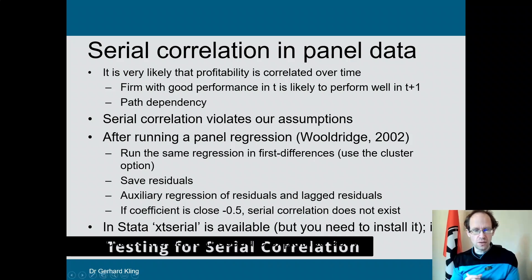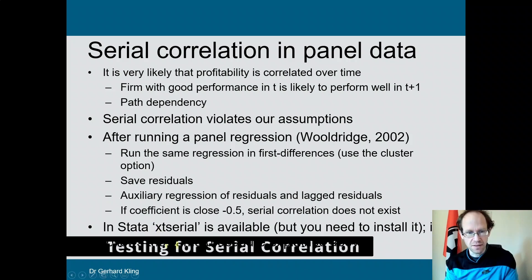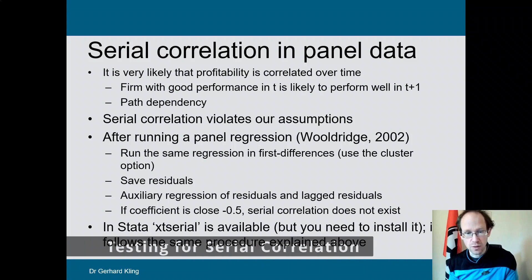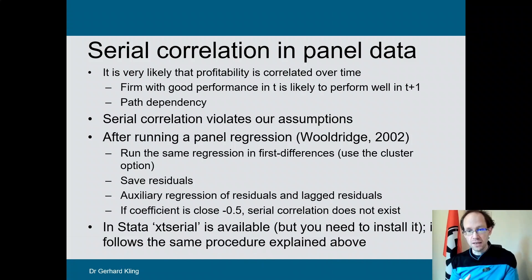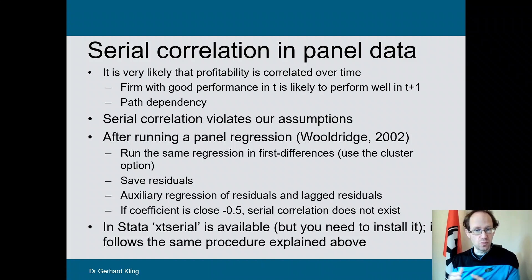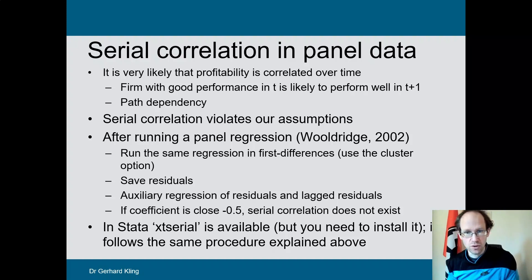We can use ready-made packages in Stata: xtserial. You just have to look for it in Stata using the help function, and if you haven't installed it yet, just install it. Alternatively, we run through this using our own regression models and so-called auxiliary regressions, which exactly replicate the test procedure. This test is based on Wooldridge.